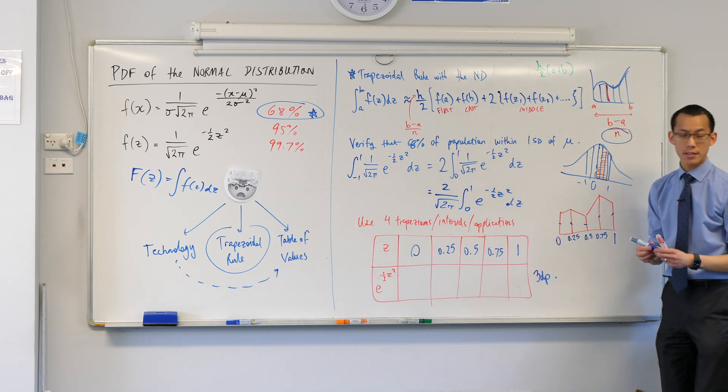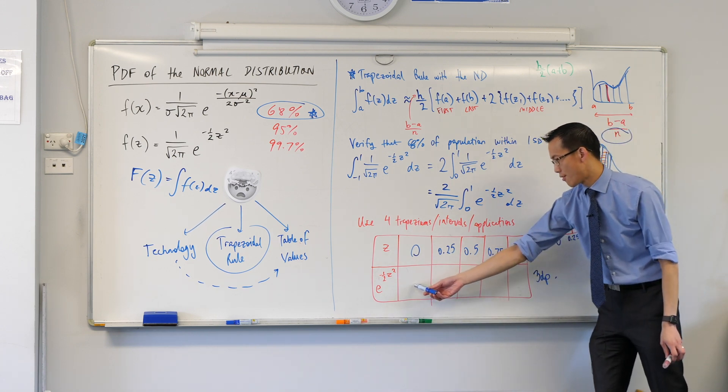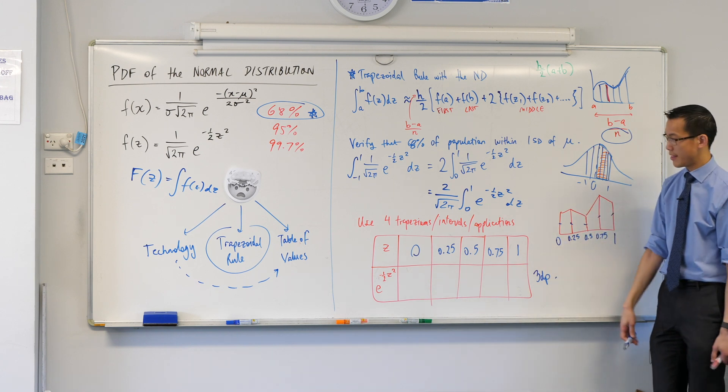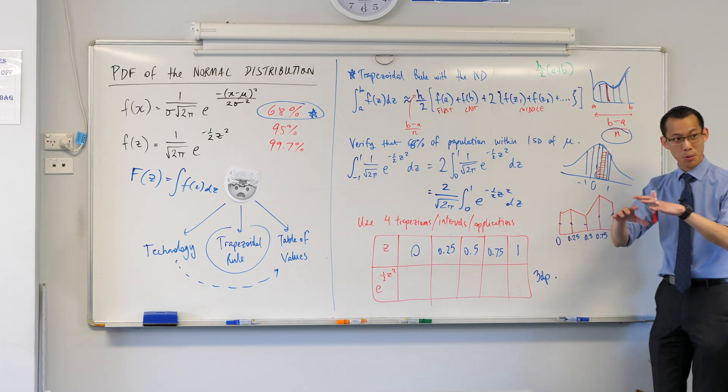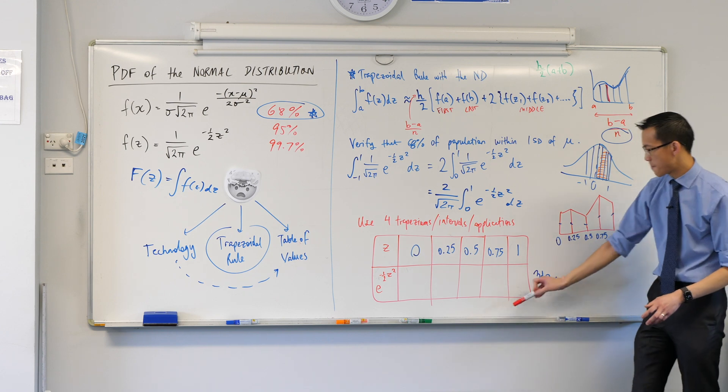This is a bit of crunch work, so I'm going to give you some time to go ahead and do that. Fill these in. Can you give me three decimal places? I think that should do it. Off you go.